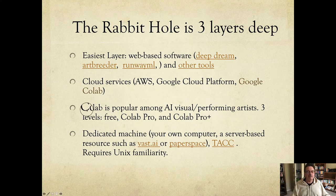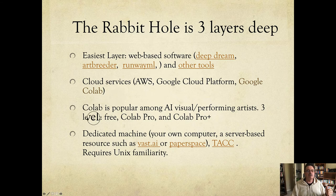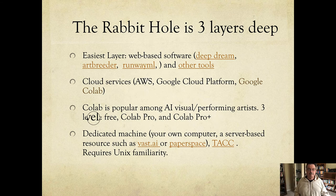One key thing worth mentioning: you don't have to have a GPU. A GPU is an essential hardware element available on most computers, but the ones used for ML art are all based on Nvidia architecture. Colab has plenty of those machines, so what you're paying for in Google Colab is web-based internet access to Google's machines. Many artists do have their own machines, but that's a bigger investment since GPU cards are not cheap.